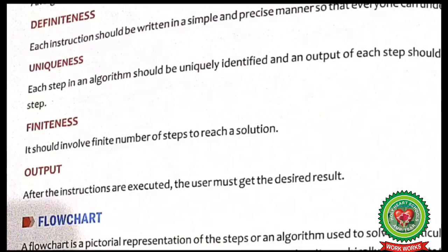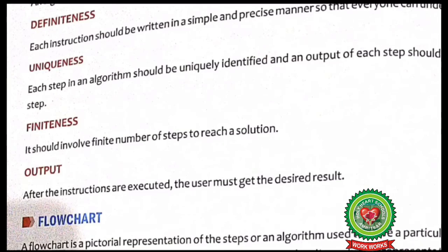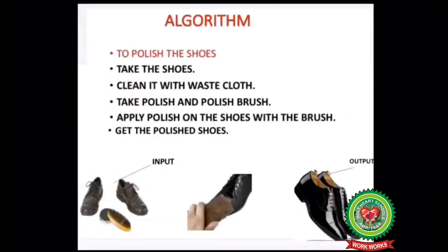The next characteristic is finiteness. It should involve a finite number of steps to reach a solution — we must have a fixed number of steps to find the desired result. Next is output. After the instructions are executed, the user must get the desired result. We give the input, all instructions get processed, and at the end we get the result in the form of output. Here we have five finite steps to get the desired output, and when all instructions are executed, we get the desired result.